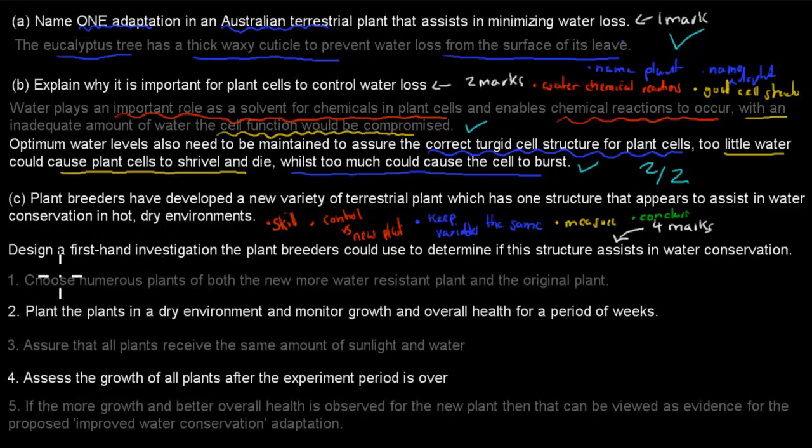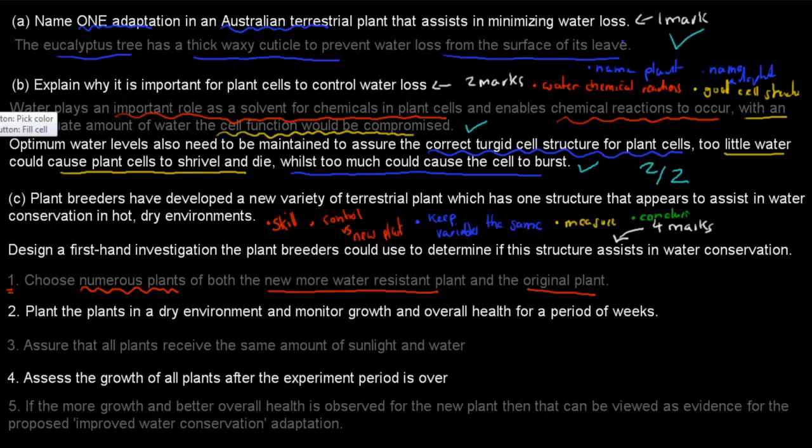So first, what I wrote is we choose numerous plants, just to make sure we don't just choose one of each because the more we have, the more reliable our actual data will be. So numerous plants of both the new, more water-resistant plant and the original plant. So we have lots of plants, lots of these types of both the new one and the original one. That's step one. And step two was plant the plants in a dry environment because that's worth testing.